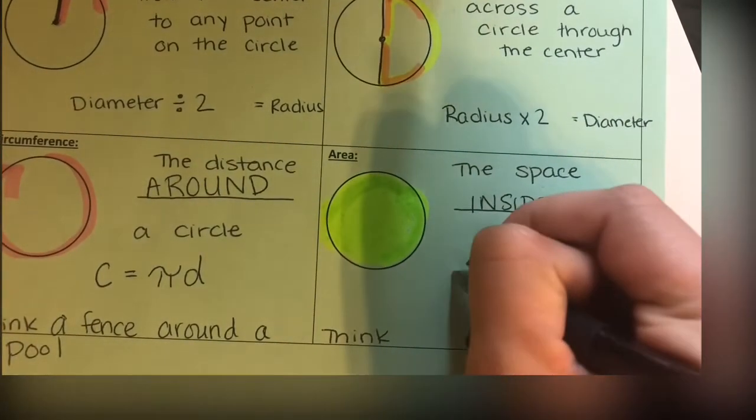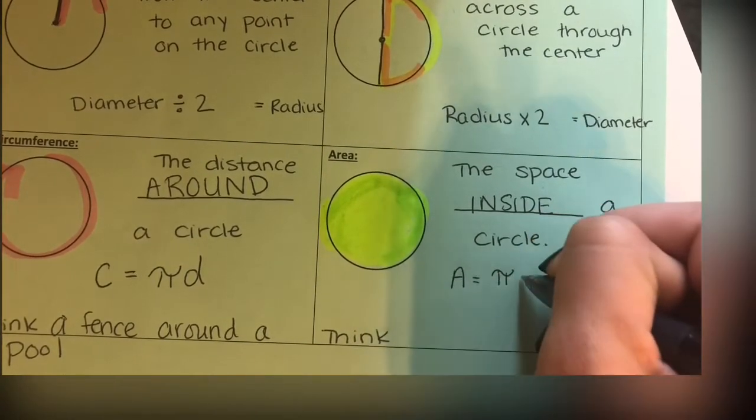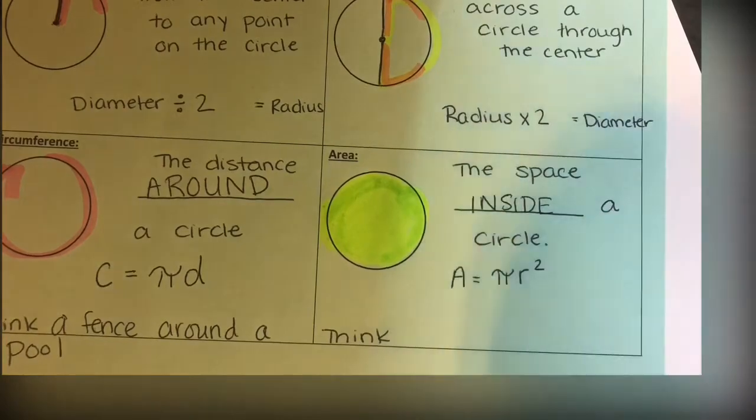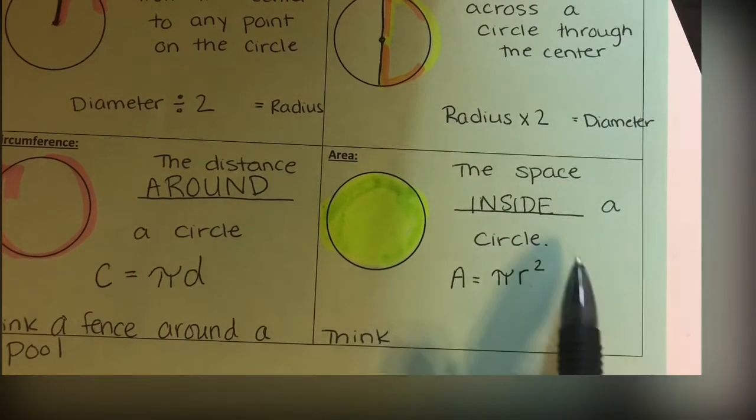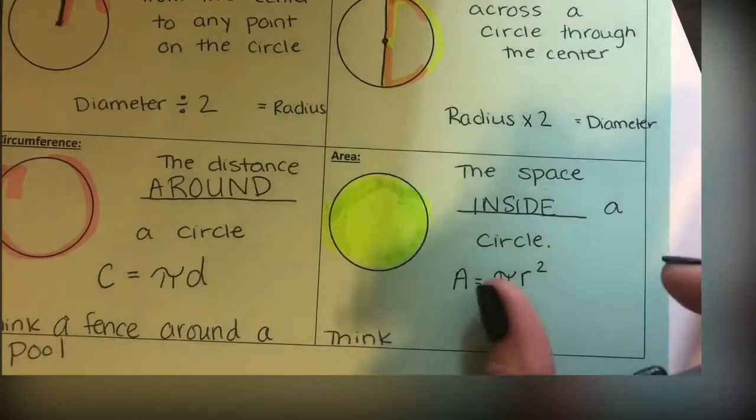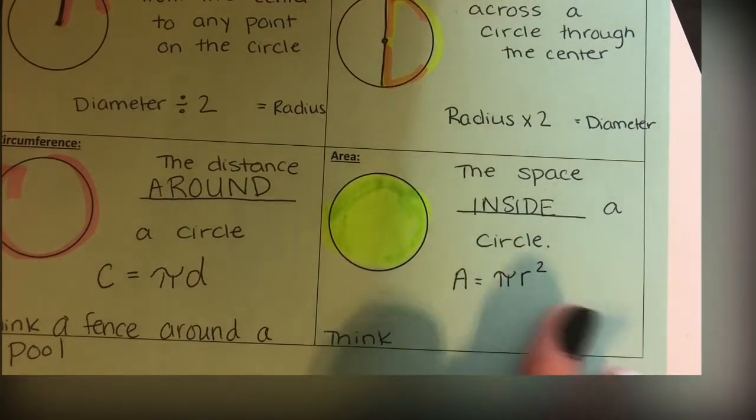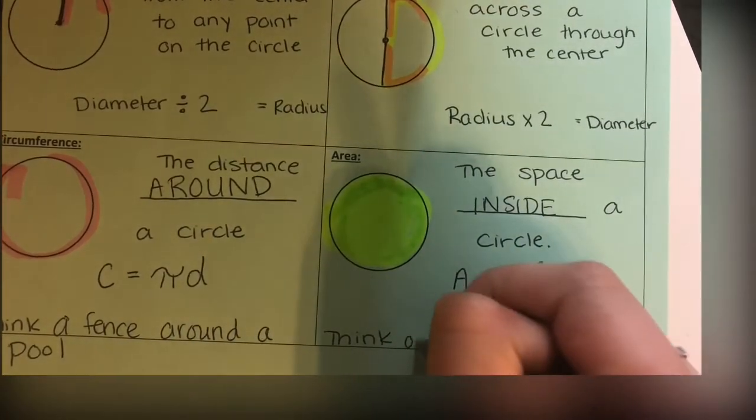If I was going to ice the top of a cake, that would be area. Area equals π times the radius squared, A = πr². Now, we're going to talk about how to square things in our calculator and what that means soon, but we're going to start with circumference this week. Just have these notes kind of in your head, but we're going to move on to this next week.